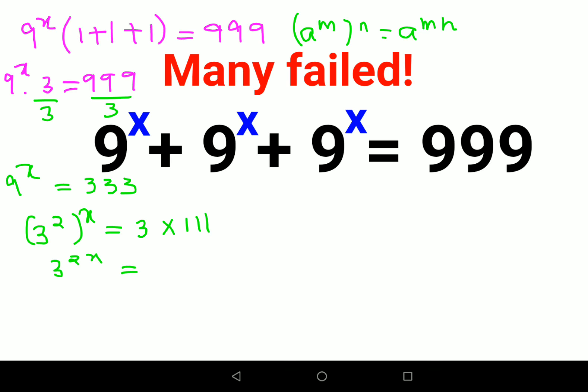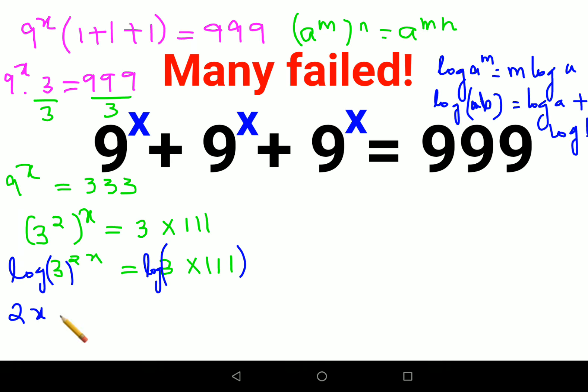After this, we apply log on both sides. Remember, log(a^m) equals m times log(a), and log of a product ab equals log(a) plus log(b). So this can be written as 2x times log(3) equals log(3) plus log(111).